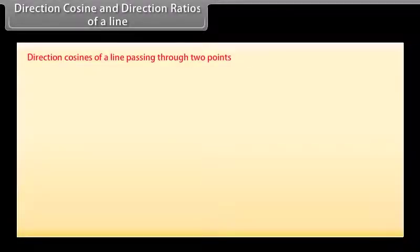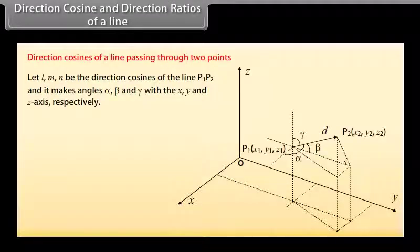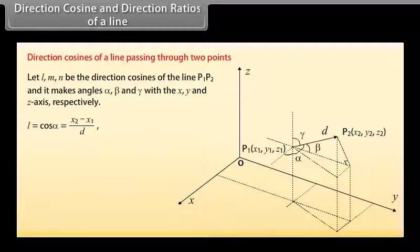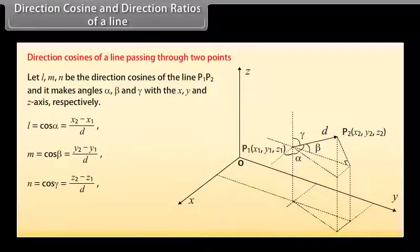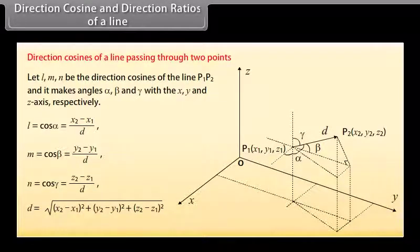Direction cosines of a line passing through two points. Let L, M, N be the direction cosines of the line P1P2 and it makes angles alpha, beta and gamma with the x, y and z axis respectively. The direction cosines are given as: L equals cos alpha equals (x2 minus x1) by D, M equals cos beta equals (y2 minus y1) by D, N equals cos gamma equals (z2 minus z1) by D, where D equals square root of (x2 minus x1) squared plus (y2 minus y1) squared plus (z2 minus z1) squared.